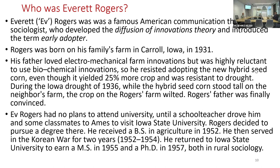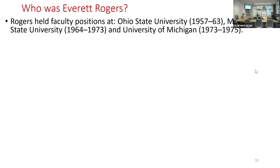Rogers had no plans to attend university, but he describes in his book how a school teacher took him and his schoolmates to Iowa State University in Ames, and after that he was convinced he should pursue a college degree. He got a Bachelor of Science in Agriculture at Iowa State University in 1952, then went to Korea for the Korean War for two years, and returned to the same institution where he earned both a PhD and a Master of Science in rural sociology.